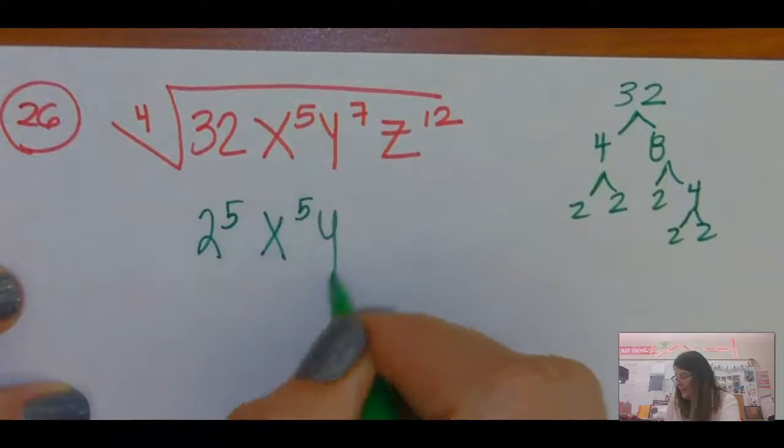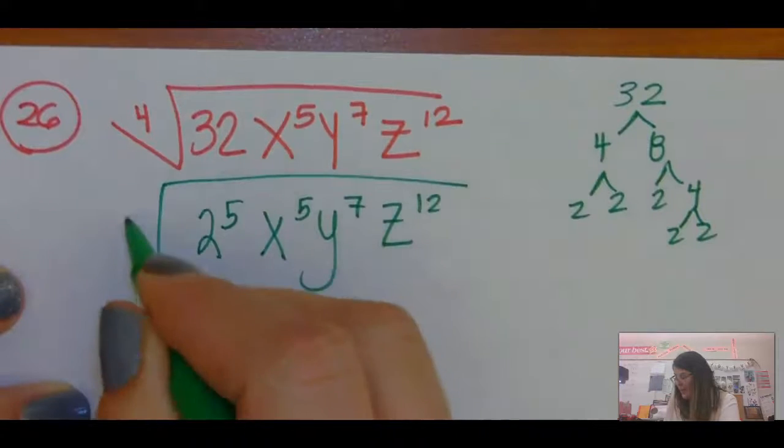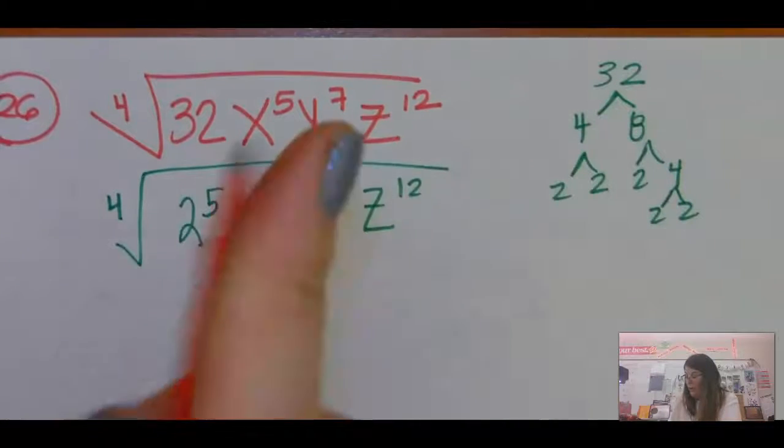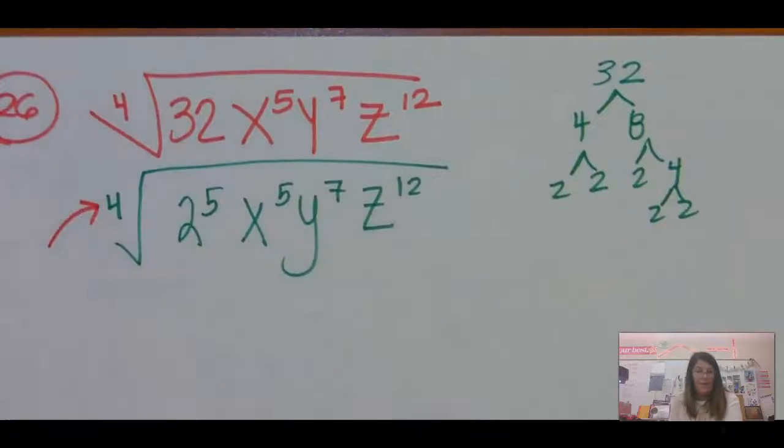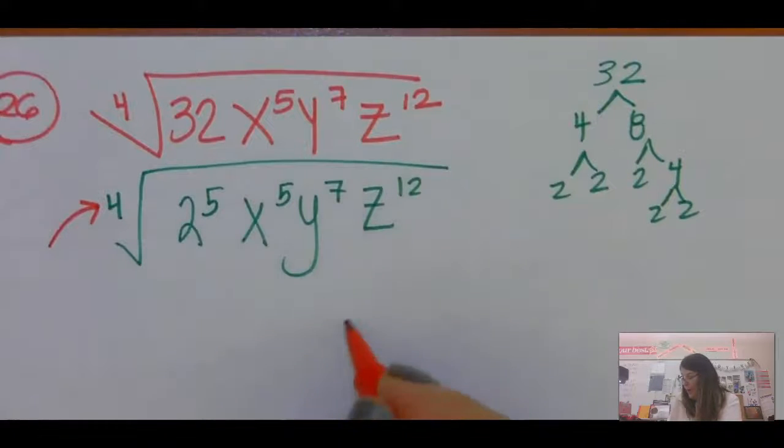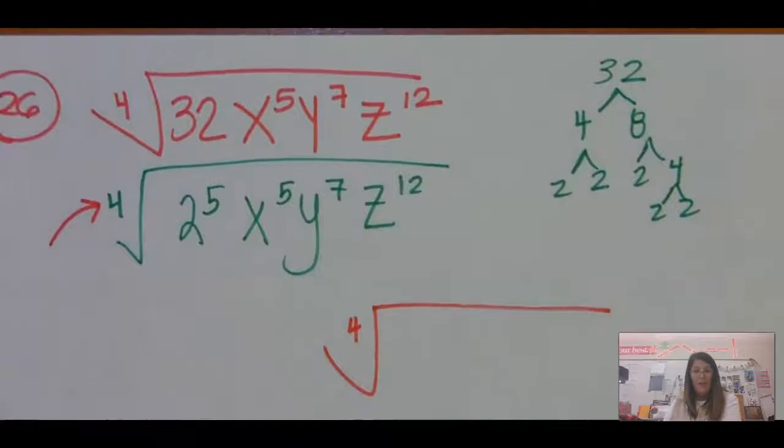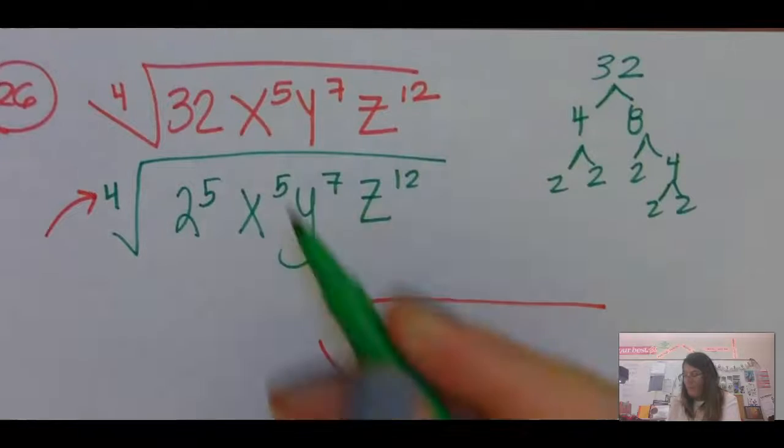x to the 5th, y to the 7th, z to the 12th. Guys, we are looking for groups of 4, because it's a fourth root. So I'm going to draw my root here, and I'm going to, one thing at a time, take out what comes out.